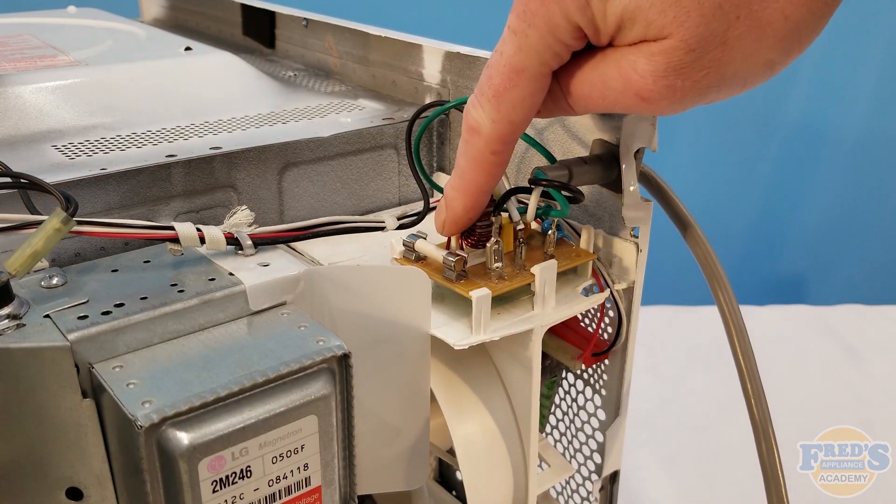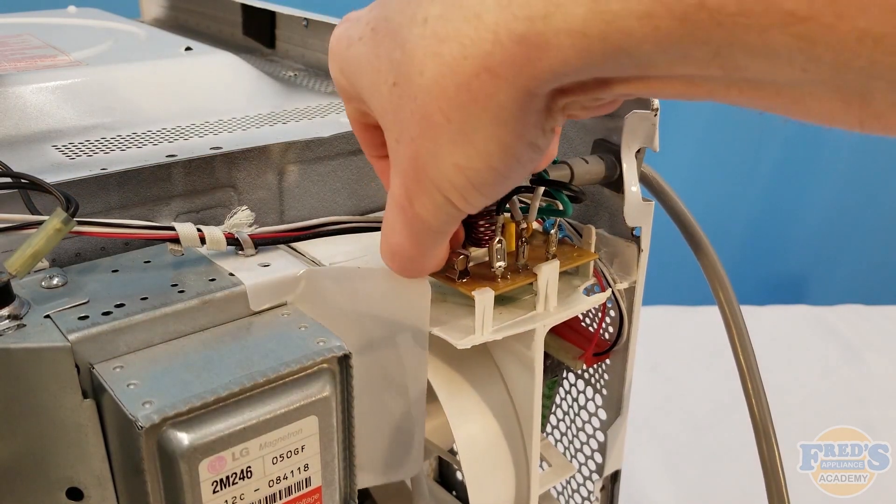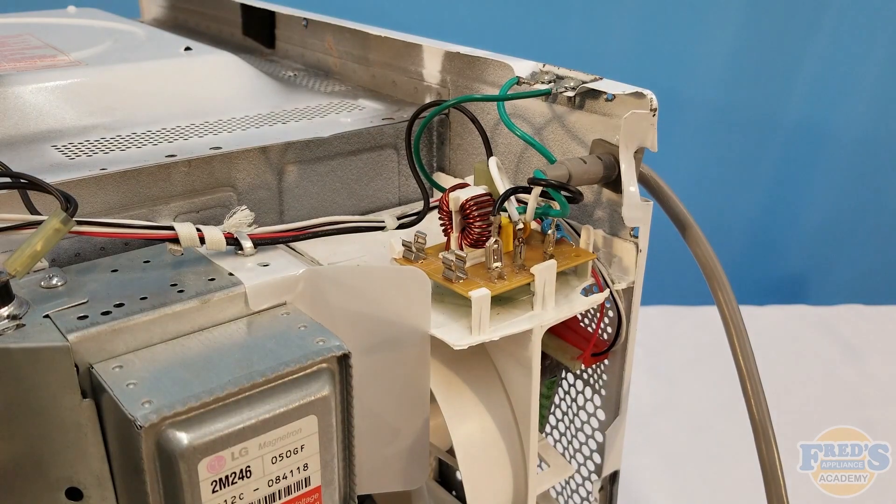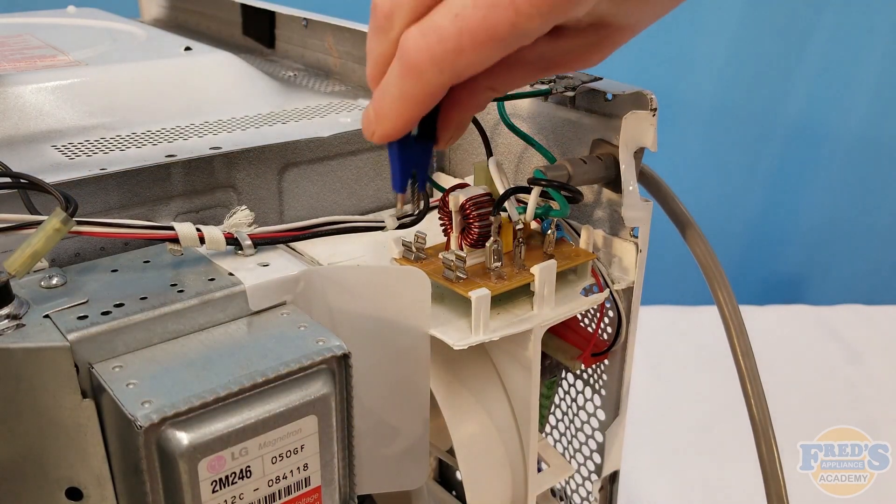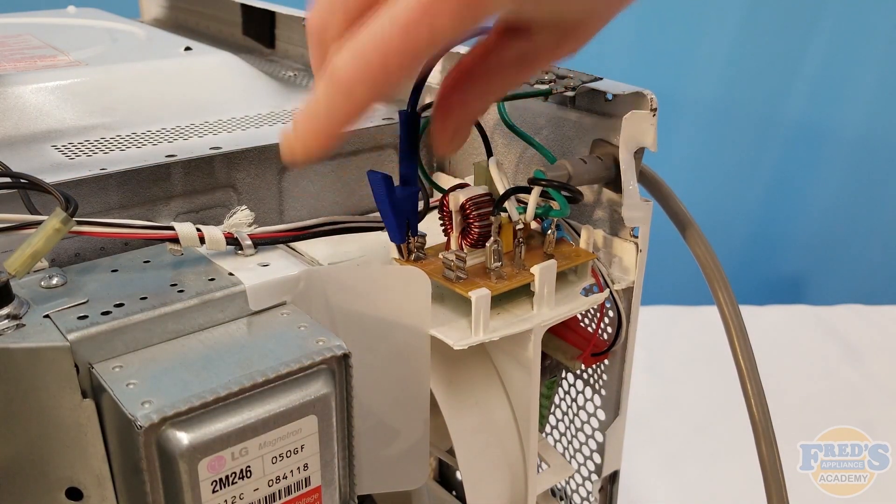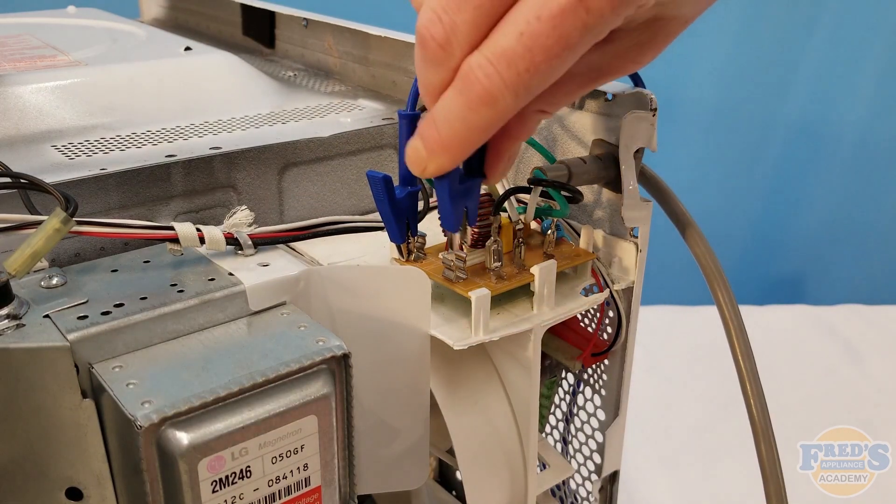So how do we use it? Well, let's say we have a microwave with a blown 20 amp fuse like you see here. Go ahead and remove your fuse and then connect an alligator lead to each of the terminals that would have connected to the fuse.